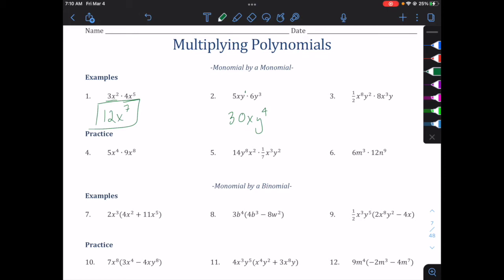Number three, coefficient of one-half. One-half times 8 is 4. Those are our coefficients. Now let's do our variables. x to the eighth and x to the third. Add those exponents. x to the 11th. We have y to the second, and y to the first gives us y to the third. And that's how easy multiplying monomials are.